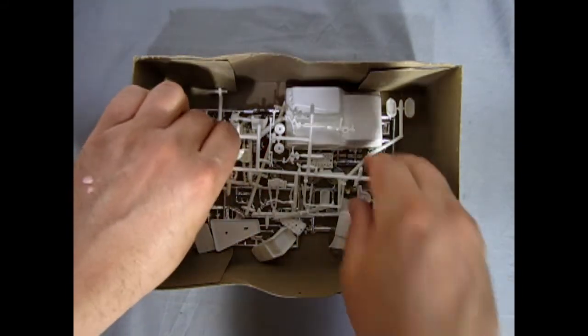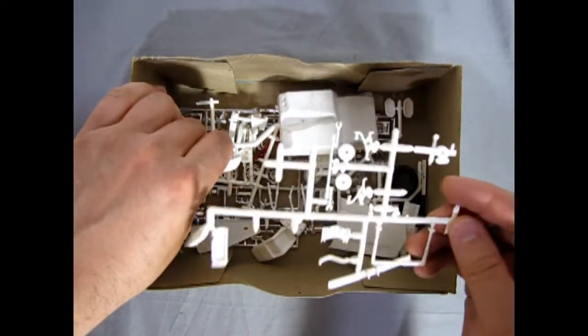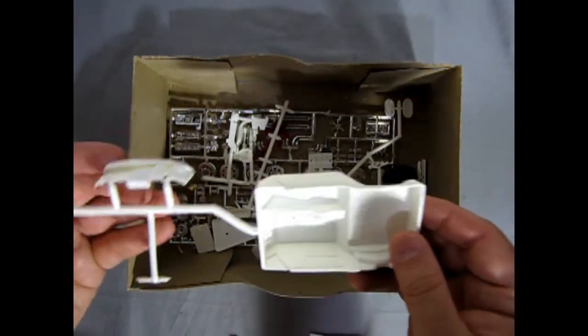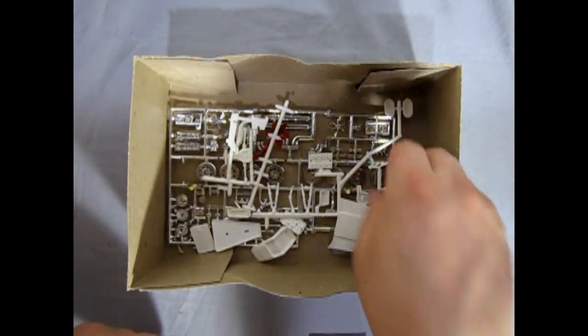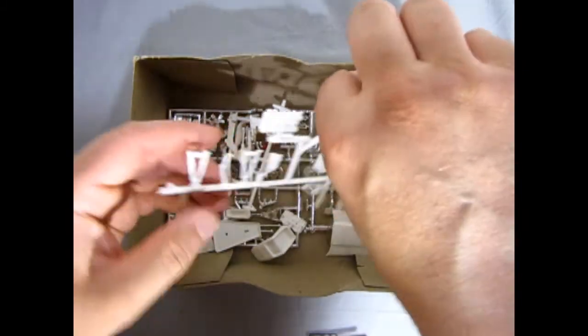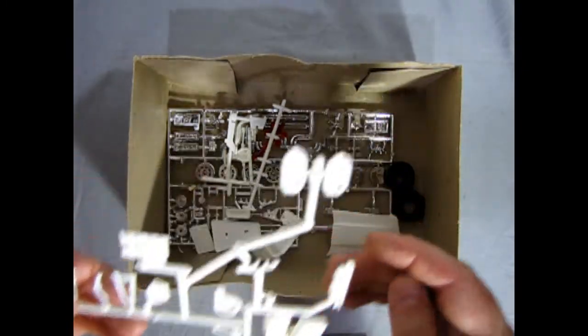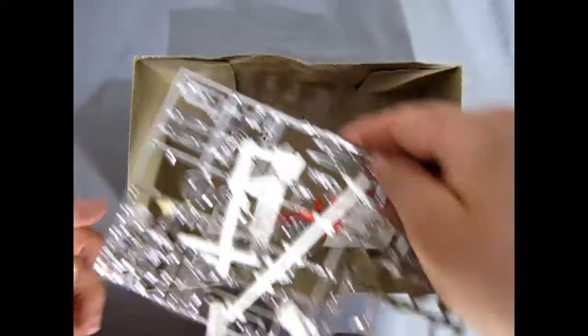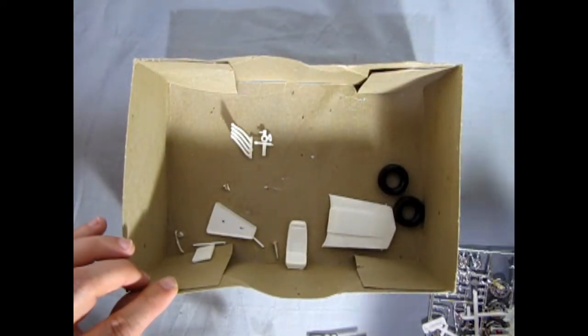And then here we have all our other components. Doesn't this look very much like the AMT 75 Corvette we looked at a while ago? However, there are some major changes to the kit but you can see where the roots of the model came from.